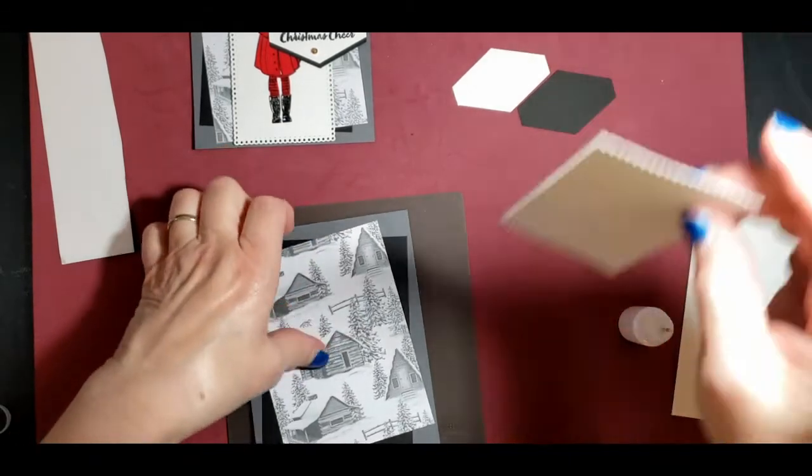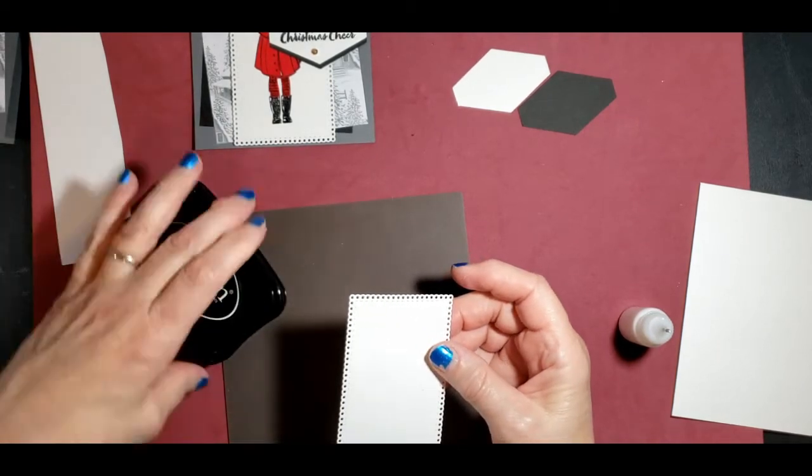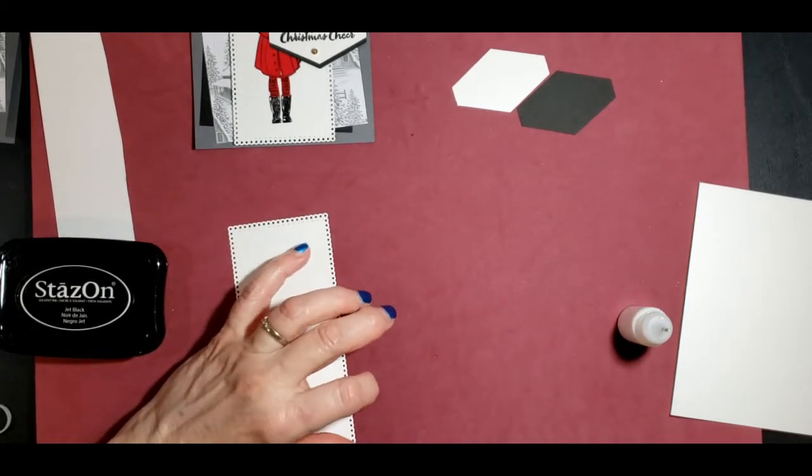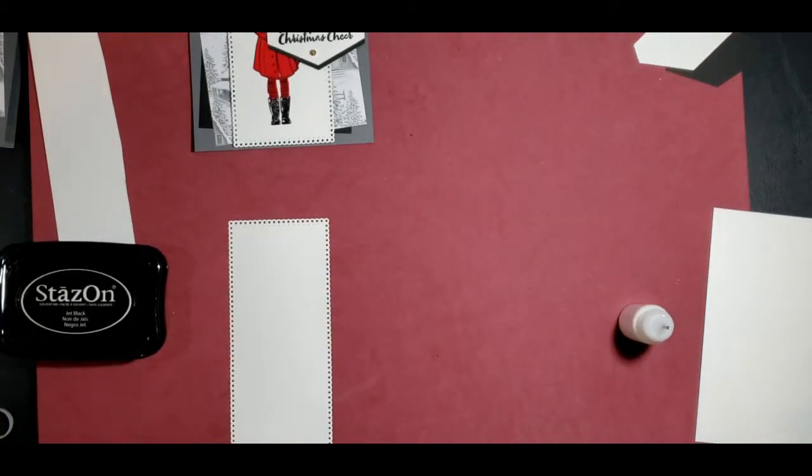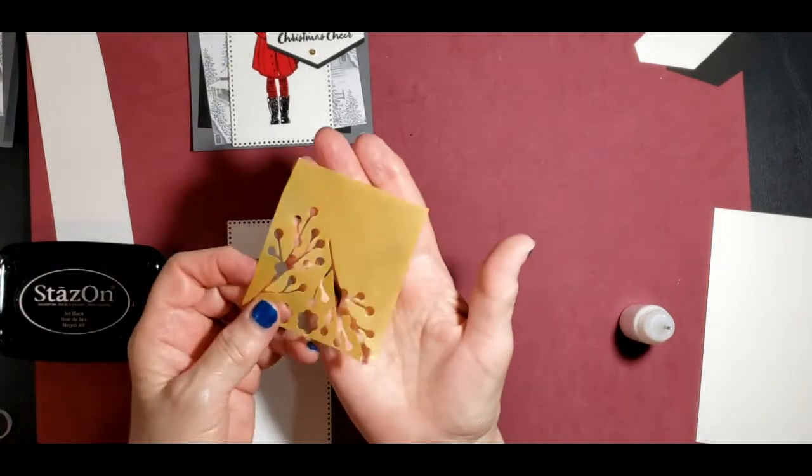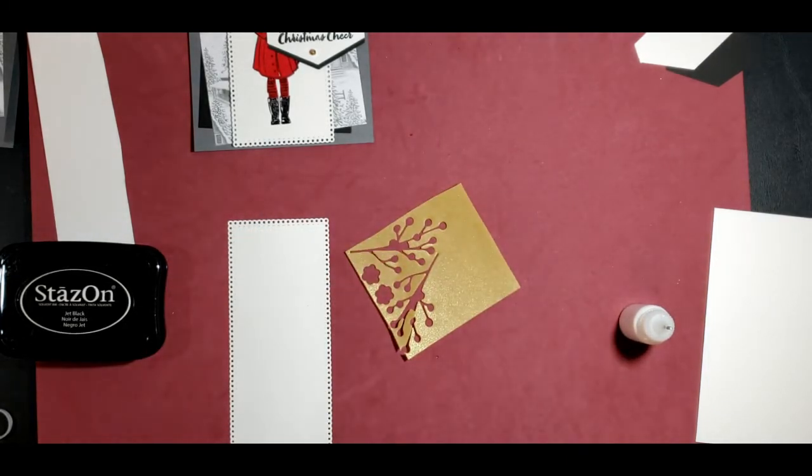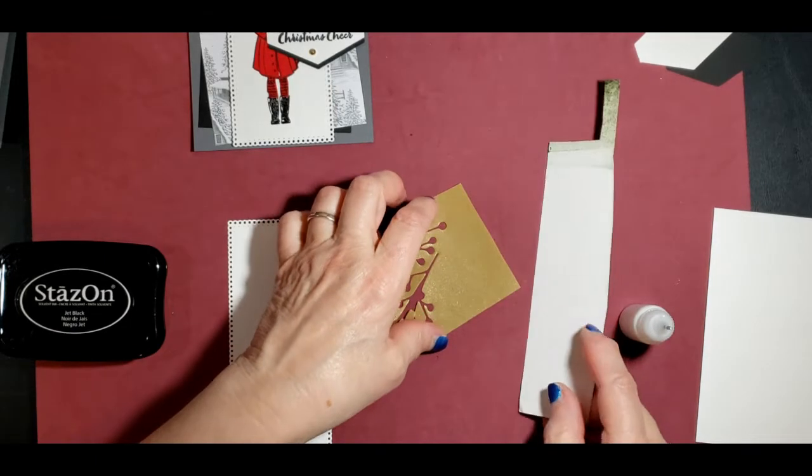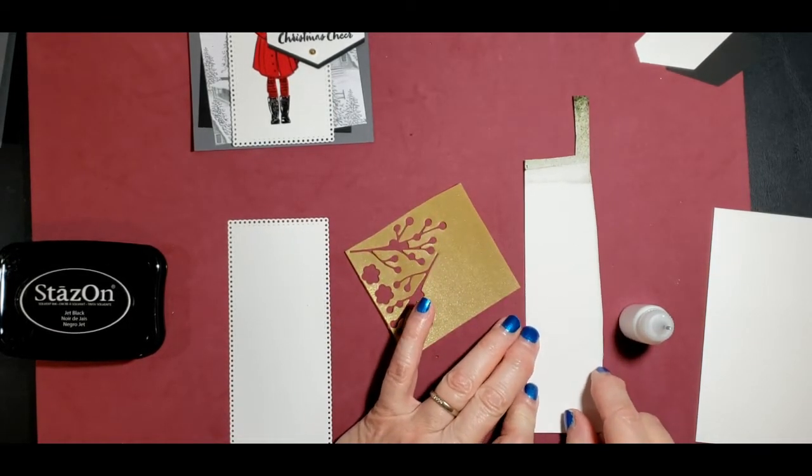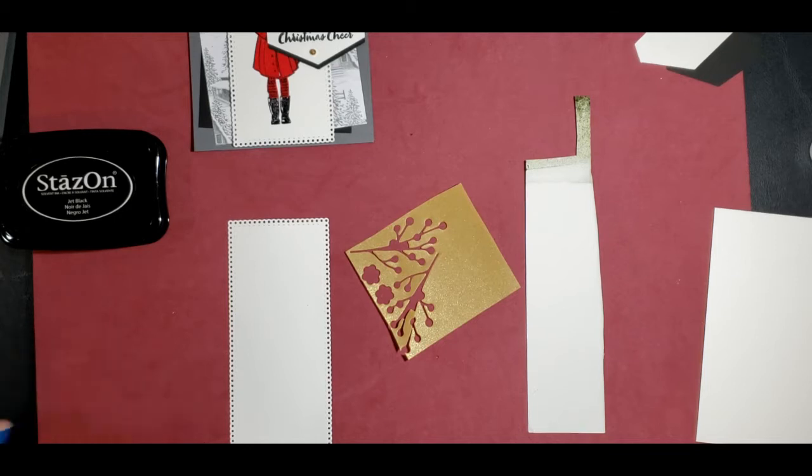We'll use our bone folder again just to flatten that out. Then next we'll want to do some of our stamping, so we're going to use our StazOn ink. I'm going to get all the things out and stamp them all together. We'll try using the gold vellum, and then we will try using the white velvet for the tree or for the coat and arms.